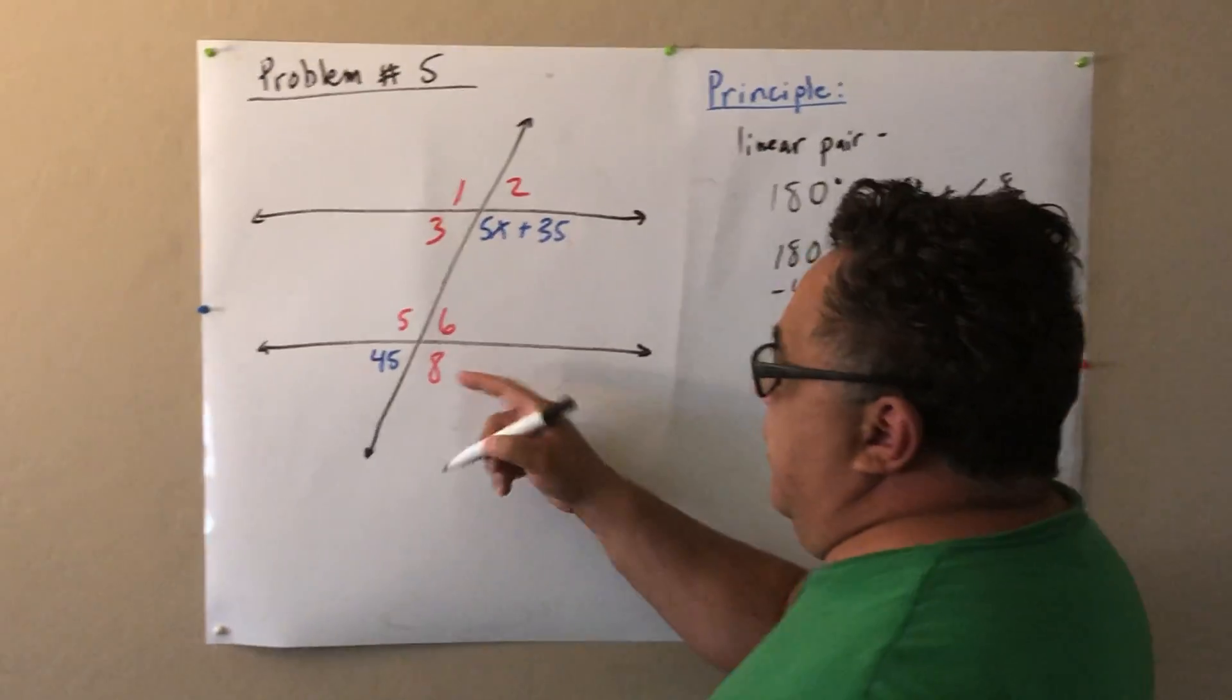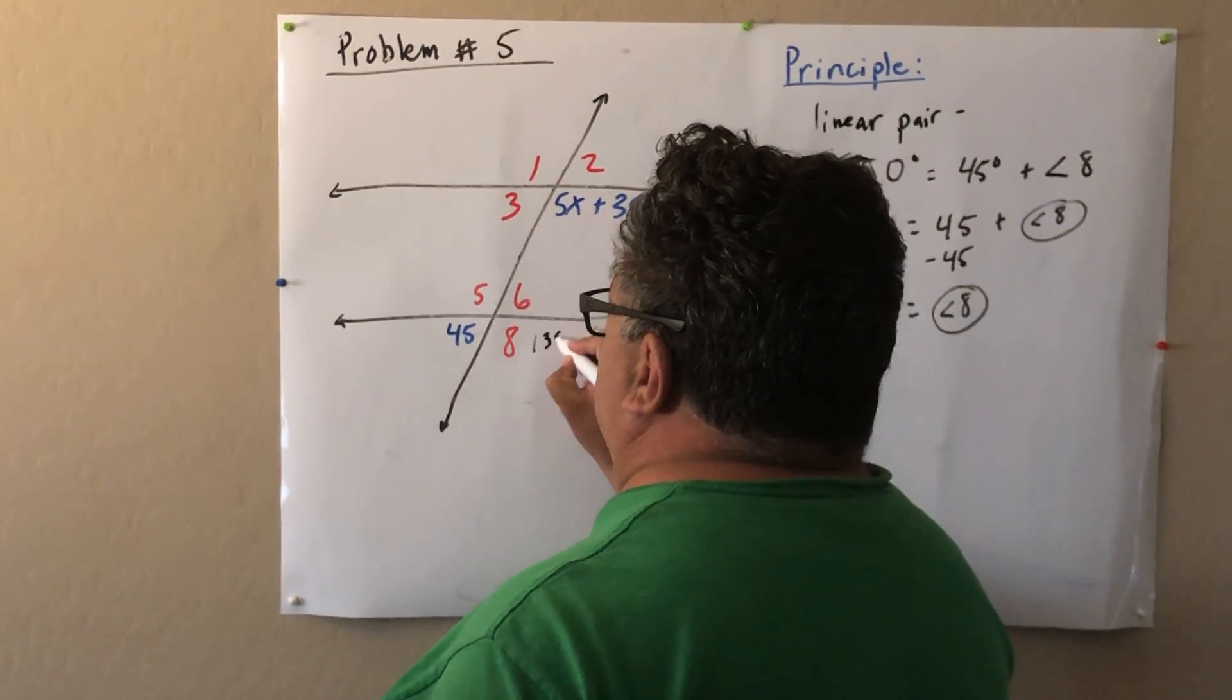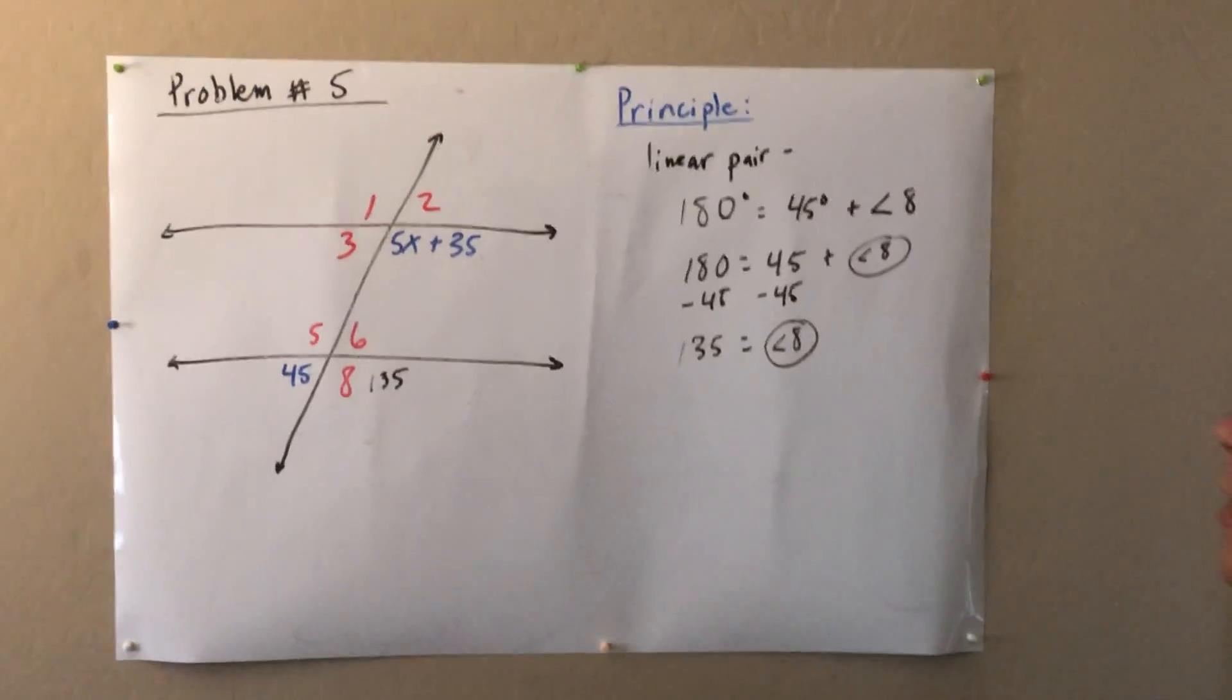So this should be 135 degrees right here, angle 8. We need that from linear pair.